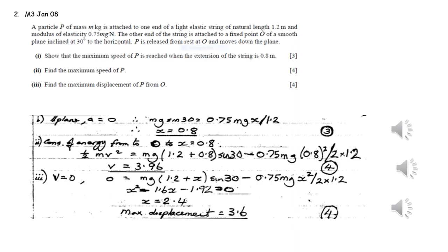At maximum speed, there's zero acceleration. Therefore, we can resolve parallel to the plane. The weight component of the object must equal the tension in the string when the acceleration is zero. To find the tension in the string, we apply Hooke's law, and this enables us to work out that the extension is 0.8 metres, as required.